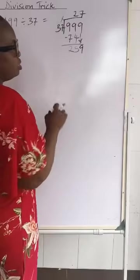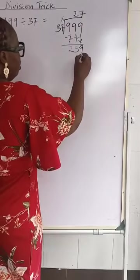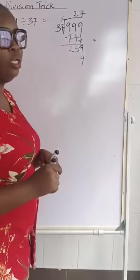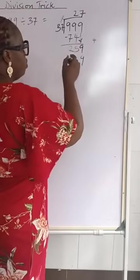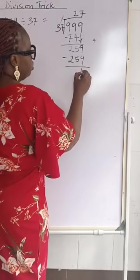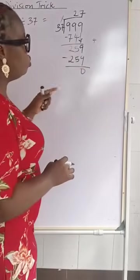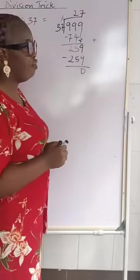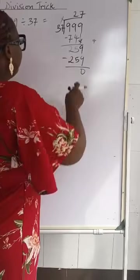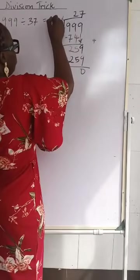7 times 7 is 49. You write your 9 and carry your 4. 7 times 3 is 21. 21 plus 4 will give us 25. Take away 259, take away 259 will give us 0. And finally the answer is 27.